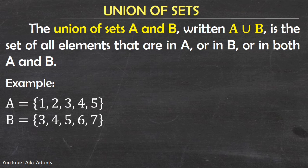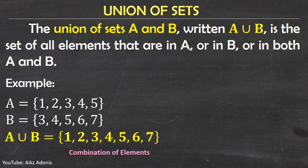Let's use the same sets A and B to understand the union of sets. The elements of set A are 1, 2, 3, 4, and 5, while the elements of set B are 3, 4, 5, 6, and 7. Remember that to get the union of sets, we will combine all the elements of set A and set B without repetition in writing the elements.